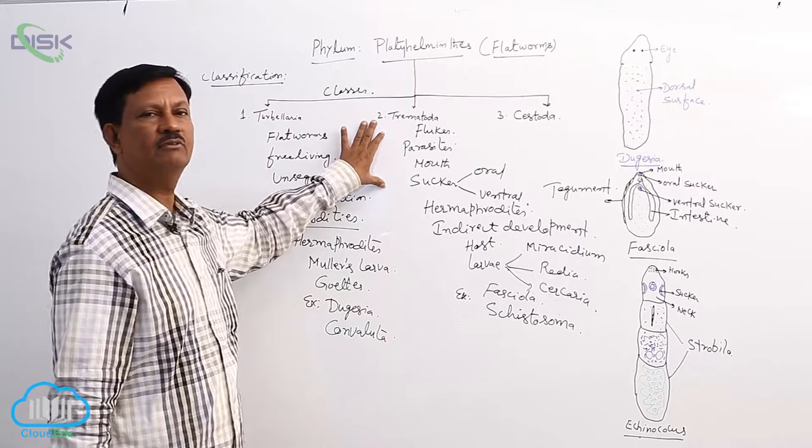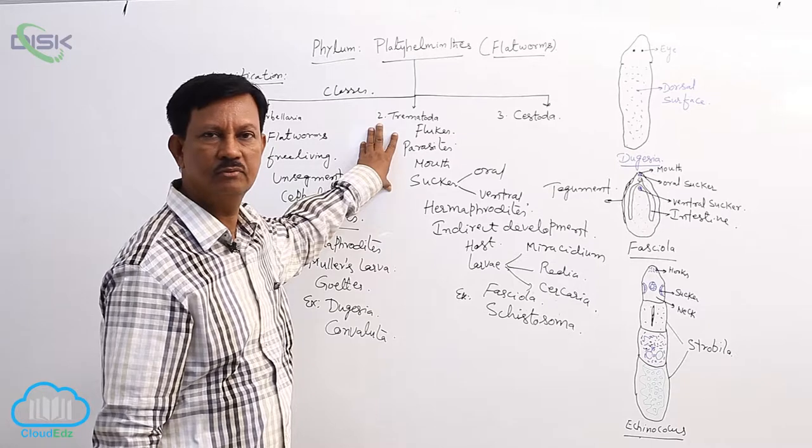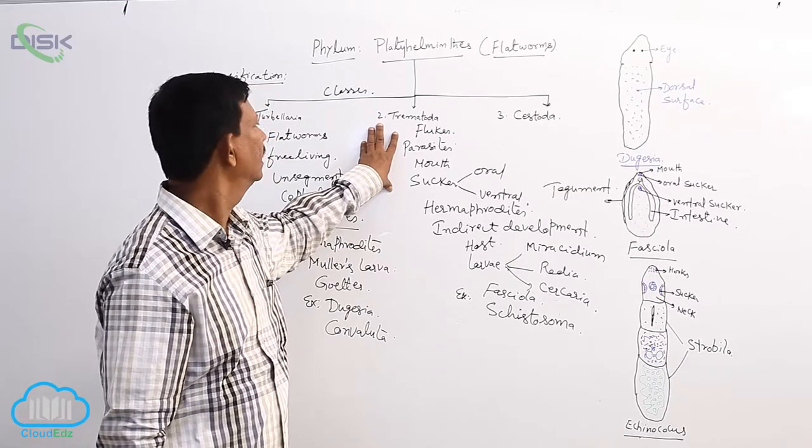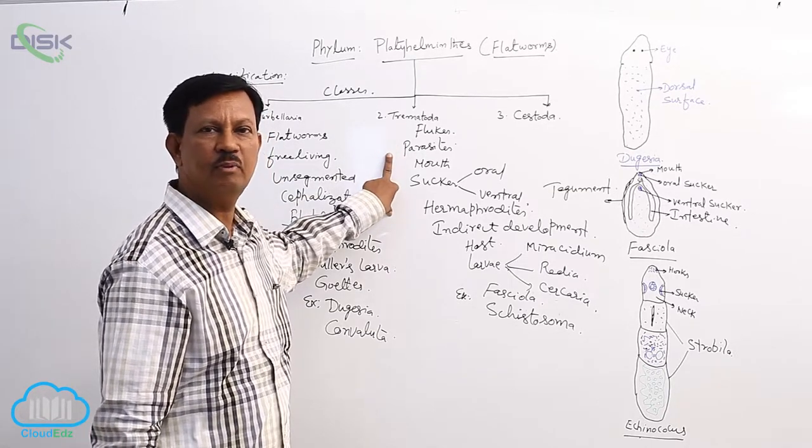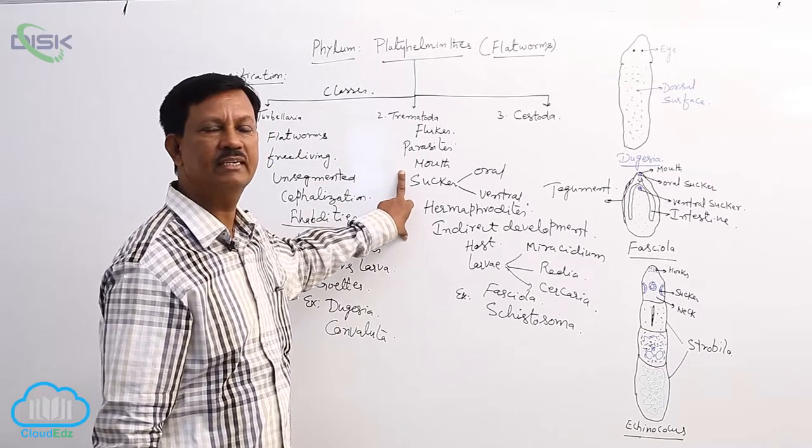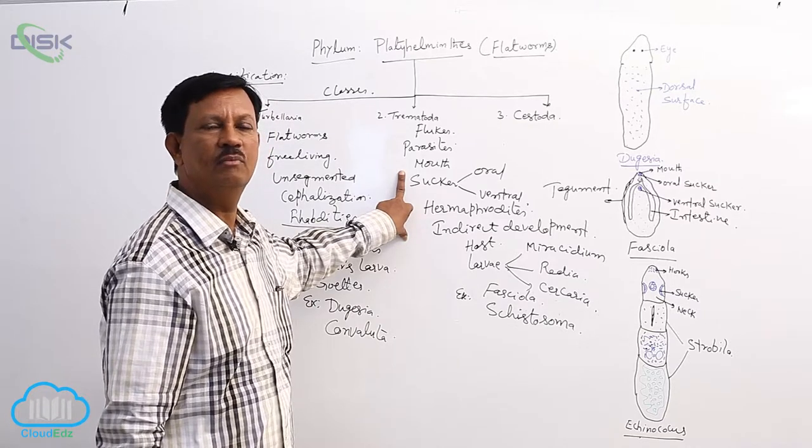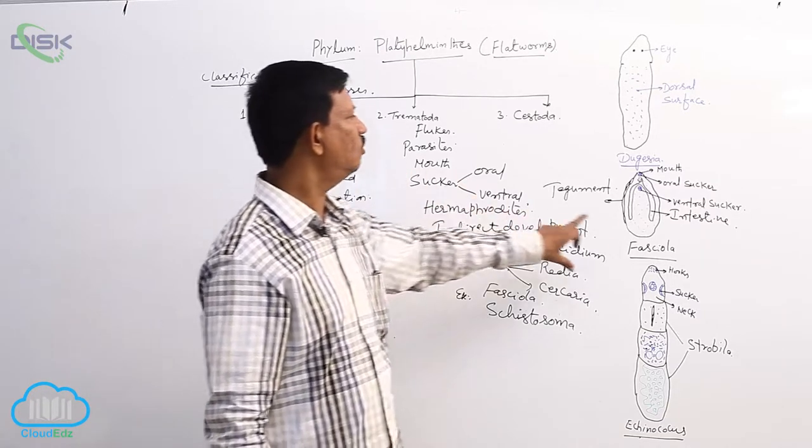Once again we have to discuss some important characters of the Trematoda. They are commonly known as flukes. They look like a leaf and they are mostly endoparasites, some ectoparasites are also present. Mouth is present at the anterior end of the body. Mouth opens into pharynx. Pharynx leads into the bifurcated intestine. There is no anus.